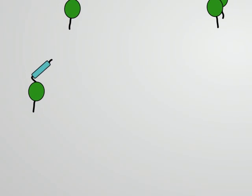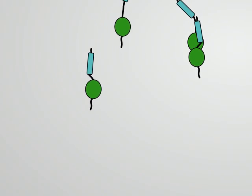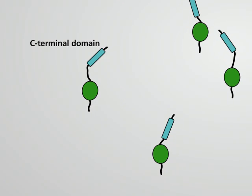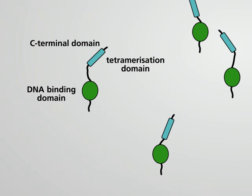P53 is a transcription factor which consists of four subunits. A subunit contains a C-terminal regulatory domain, a tetramerization domain, a DNA-binding domain, and an N-terminal transactivation domain.